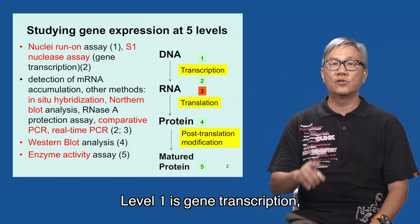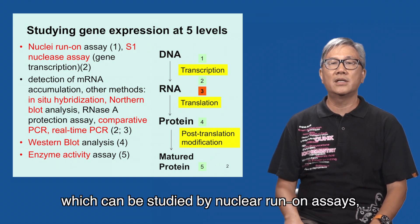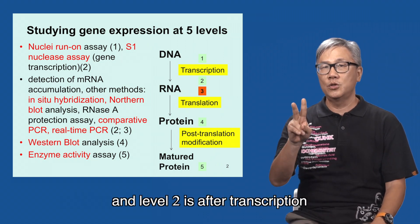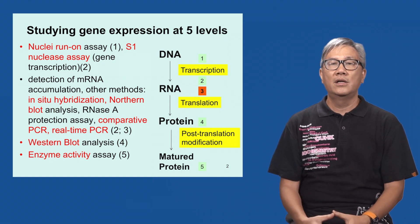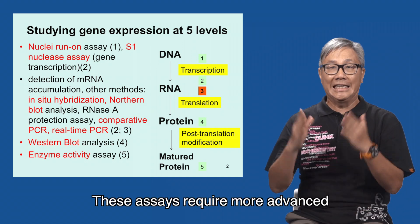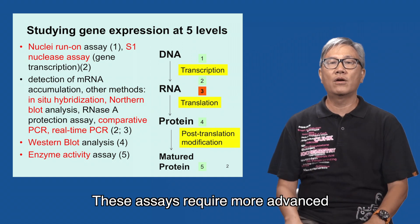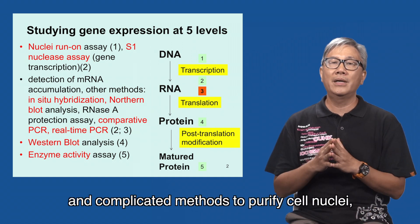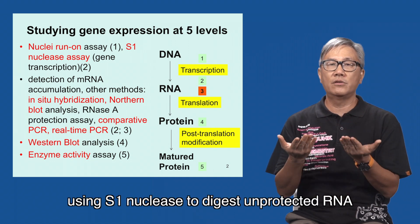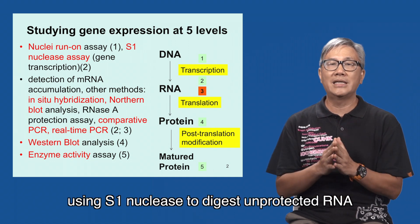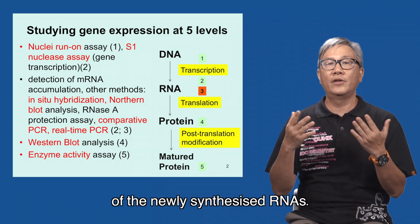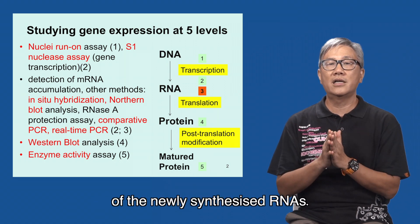Level one is gene transcription, which can be studied by nucleonome assays. Level two is after transcription and is studied with the S1 nuclease assay. These assays require more advanced and complicated methods to purify cell nuclei, using S1 nuclease to digest unprotected RNA with specific probes and P32 labeling of newly synthesized RNAs.